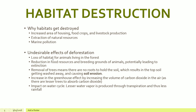Habitat destruction — why do habitats get destroyed in the first place? We are using an increased area of land for housing, food crops, and livestock production. When we do that, we need to destroy certain parts of land that are habitats for animals and plants. We also need to extract natural resources, which can destroy habitats, and marine pollution — the pollution of the sea — affects animals living inside it because that is their habitat.